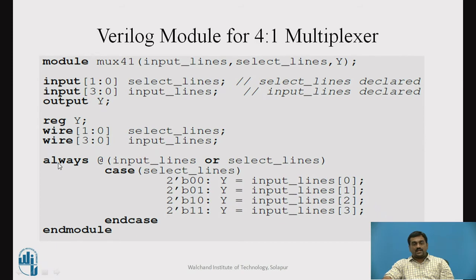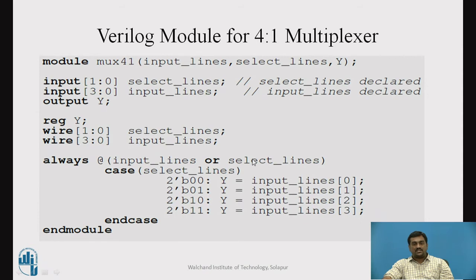Then we will write down the always block, using the always keyword. The always block is like a while-one loop — it is going to execute continuously. So always @ inside the bracket we provide the OR operation between input_lines and select_lines. The meaning is that for any change in these input lines or select lines, this block is going to get executed.